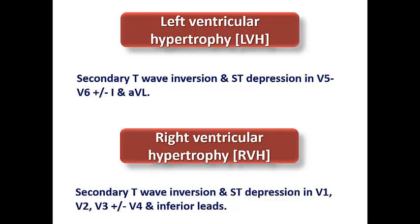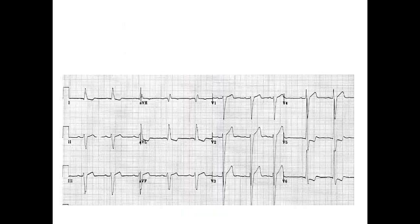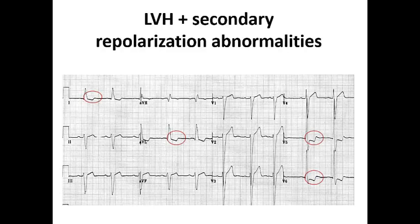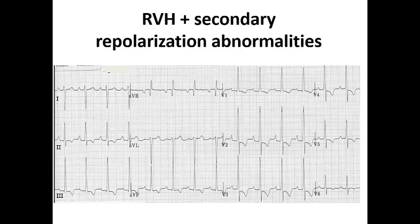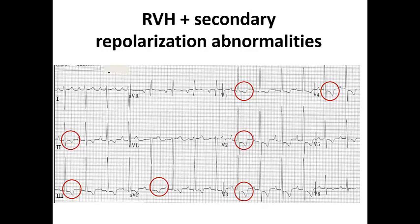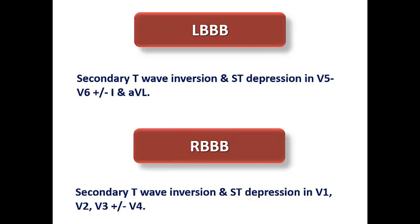In LVH, secondary T wave inversion and ST depression usually occur in V5, V6, and lateral leads (I, AVL), whereas in RVH they usually occur in right precordial leads V1, V2, V3, sometimes V4, and may extend to inferior leads. Here we can see the voltage criteria of LVH with T wave inversion and ST segment depression in I, AVL, V5, and V6 — this is LVH with secondary repolarization abnormality, or LVH with strain pattern. In another example, the patient has ST depression and T wave inversion from V1 to V4 plus inferior leads — RVH with strain pattern.